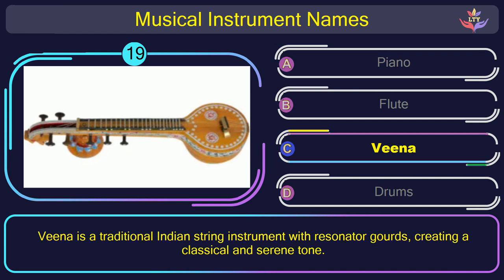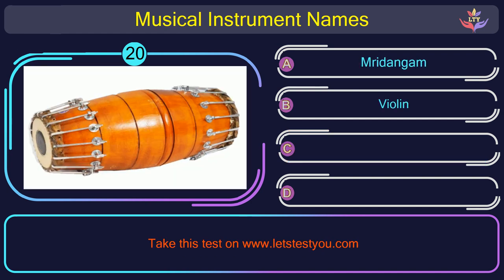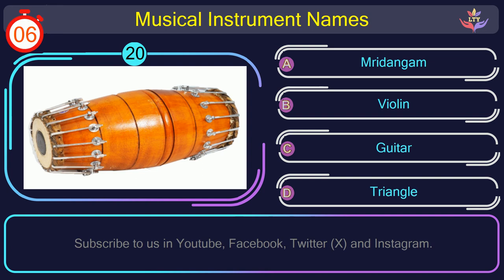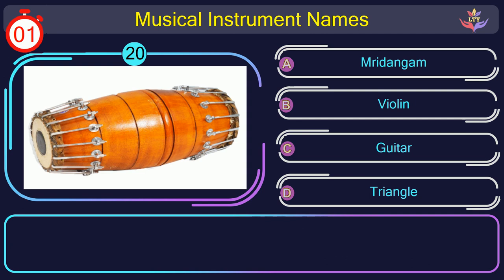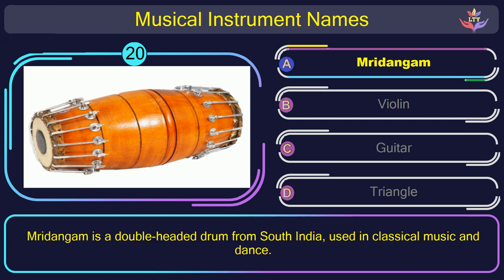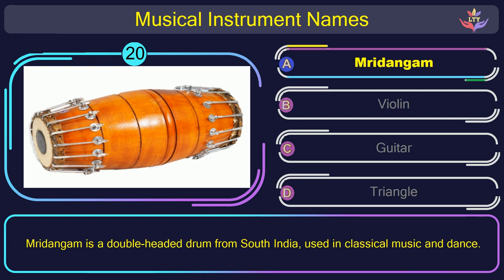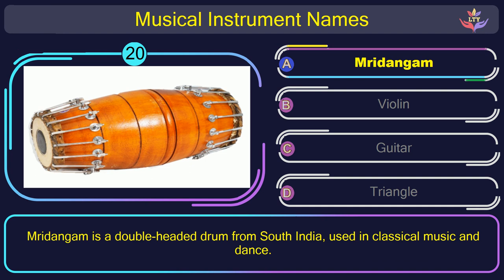Question number 20. Guess the name of the musical instrument in this picture. The correct answer is option A: Mridangam. Mridangam is a double-headed drum from South India, used in classical music and dance.